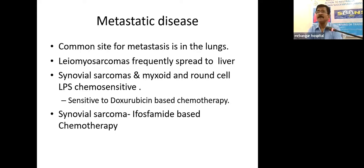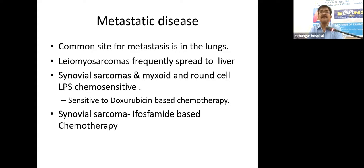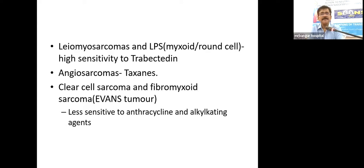For metastatic disease, the most common site from retroperitoneal sarcomas is the lungs; leiomyosarcomas may spread to the liver. The mainstay of treatment for metastatic disease is systemic chemotherapy and in some instances targeted therapy, based on histology from core biopsy and immunohistochemistry. There is no role for radical resection in metastatic disease unless the local tumor is resectable and causing compression symptoms.